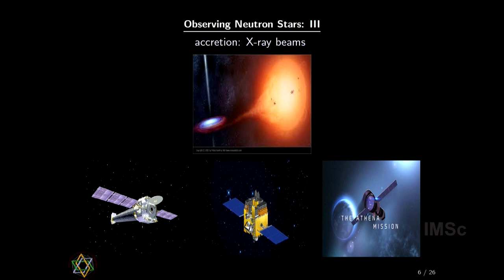Then comes a phenomenon called accretion. If a neutron star is gravitationally bound to a giant star, the neutron star can pull matter from its companion due to extreme gravity. When that matter falls onto the surface of the neutron star, there is a very strong X-ray beam — similar in principle to how X-rays are generated in a lab by heating a surface with very high energy particles. That X-ray beam can be detected by placing an X-ray detector on a satellite, and India's AstroSat satellite is doing that very well.